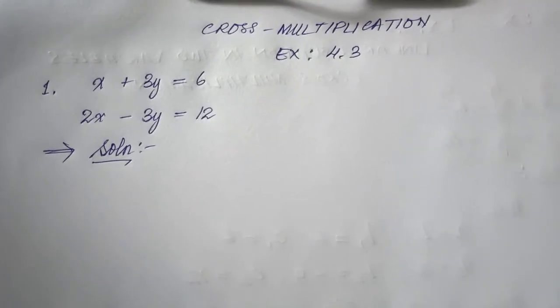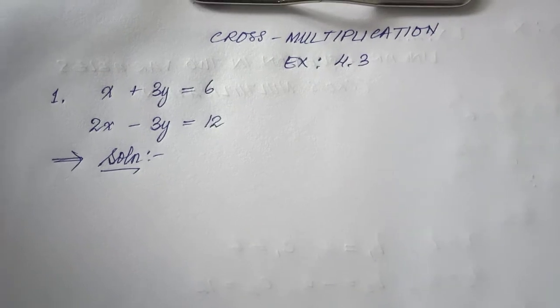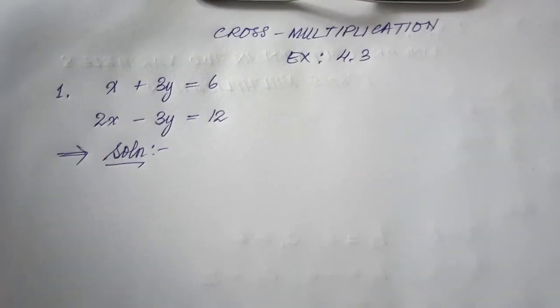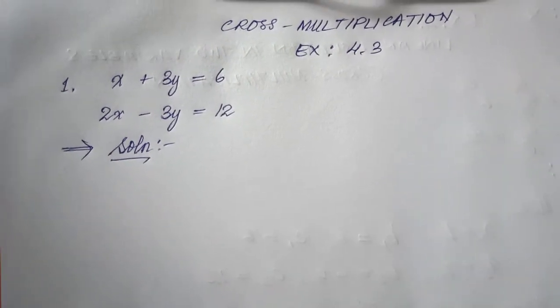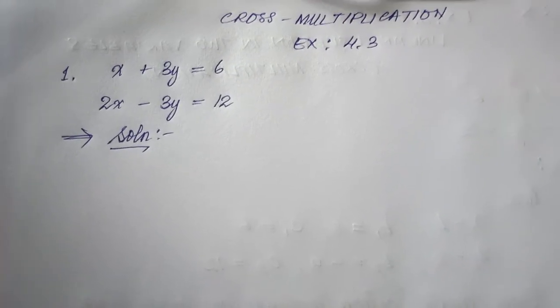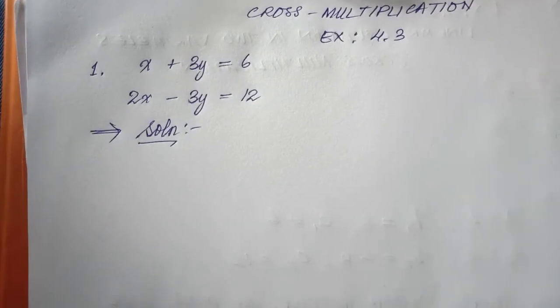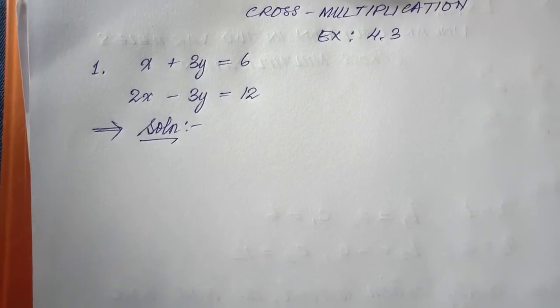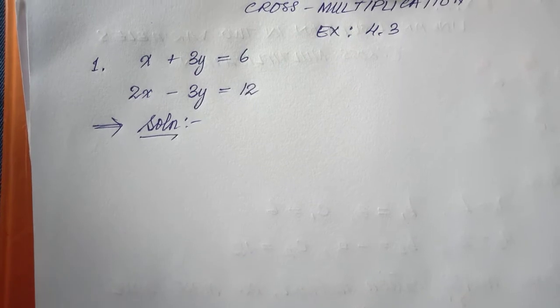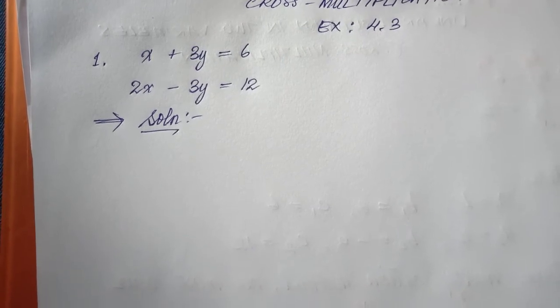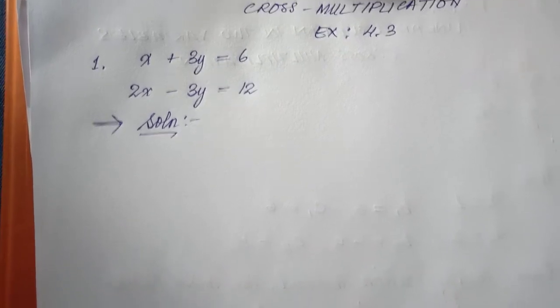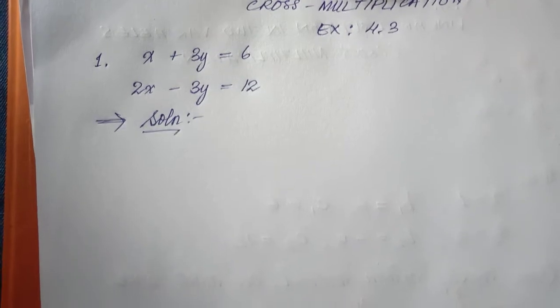Class 10 MBSC Mathematics quick exercise 4.3 — linear equations in two variables. I will be solving these using the cross multiplication method. Let's solve question number one. We are given: x plus 3y is equal to 6, and 2x minus 3y is equal to 12.